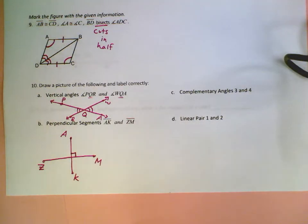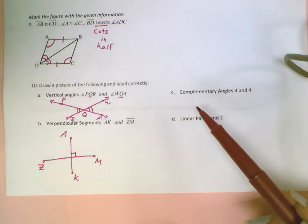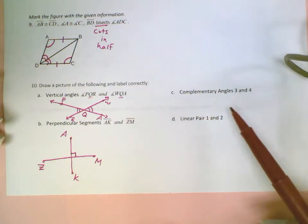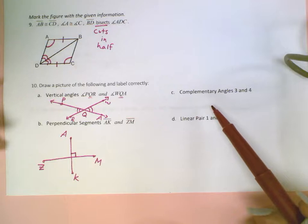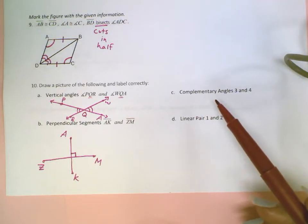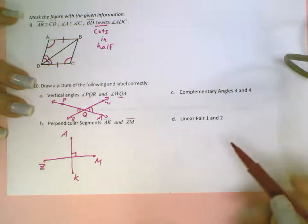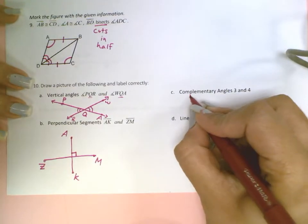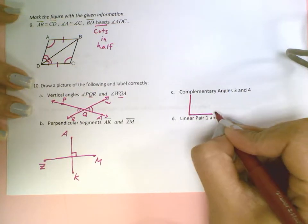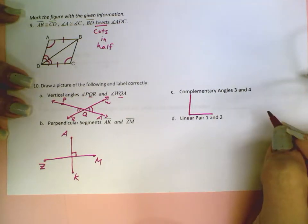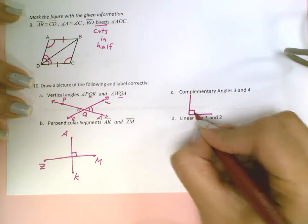Going on to letter C. Complementary angles 3 and 4. Complementary, remember, is when two angles add up to be 90 degrees. So I'm going to start by drawing a 90 degree angle. How can I show that it's a 90 degree angle? By making sure I include the little box.